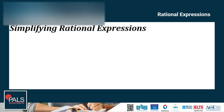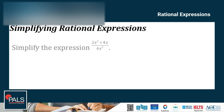In simplifying rational expressions, all you need to do is remember how to simplify a fraction. Let's try an example. Simplify the expression 2x squared plus 4x, all over 4x squared. Here, a 2x can be factored out of both the numerator and denominator.